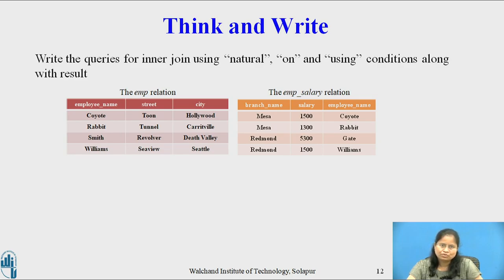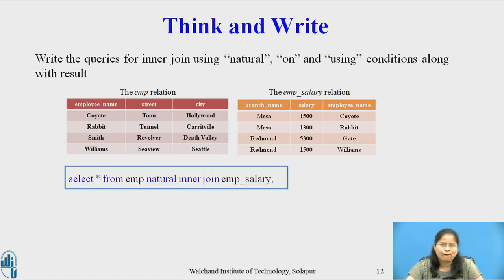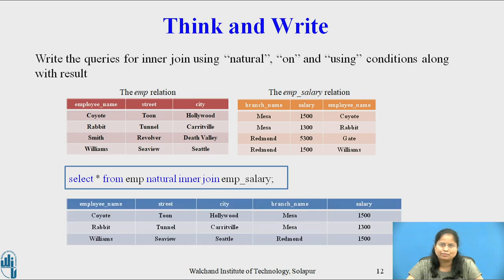I hope all of you have completed this activity. Consider the following relations: employees and employee salary. First consider the inner join using natural condition. The query is: SELECT * FROM emp NATURAL INNER JOIN emp_salary. The common attribute employee name appears only once in the result.